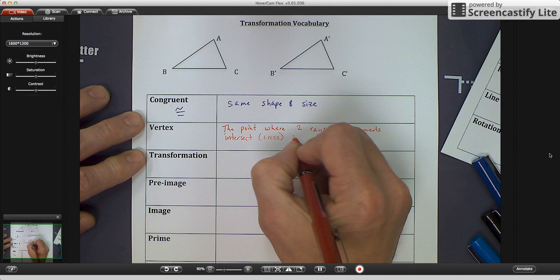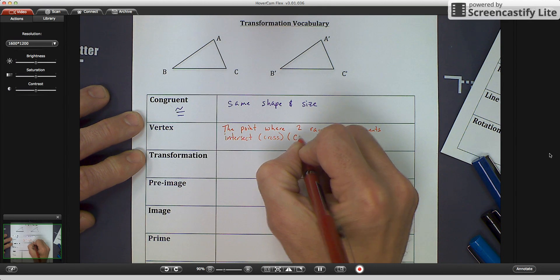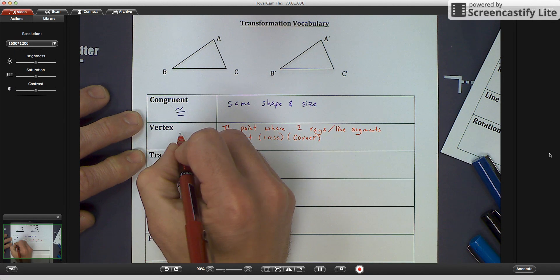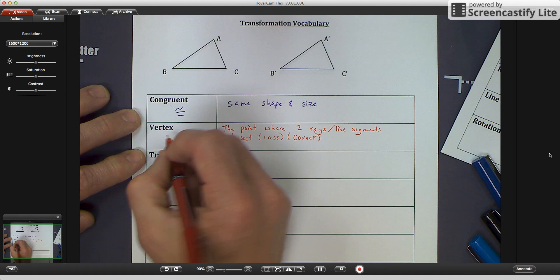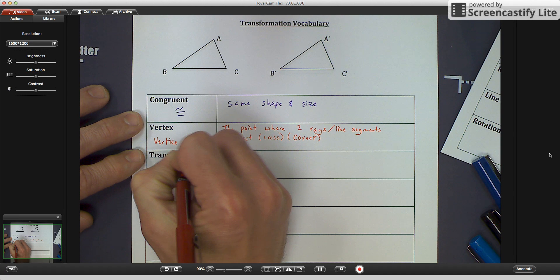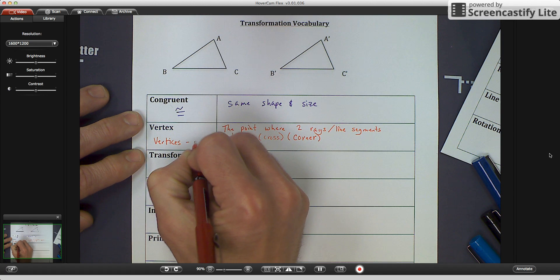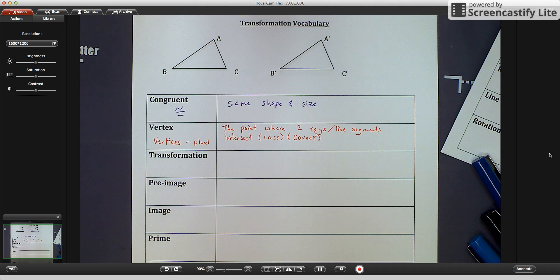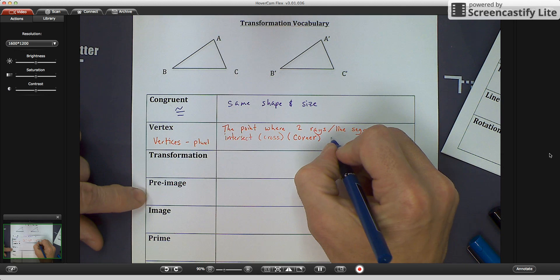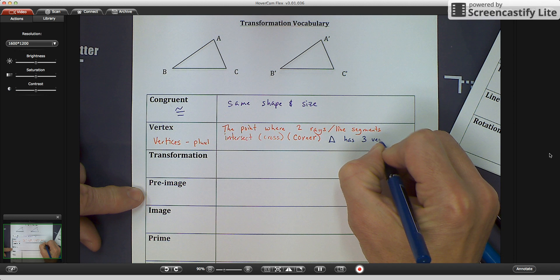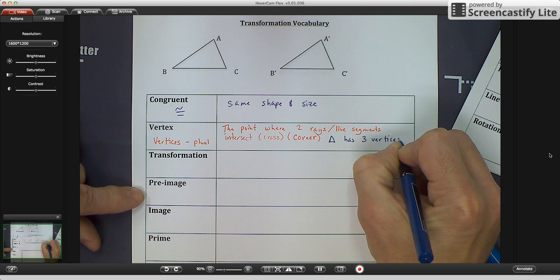Okay, a vertex is a corner on a shape. Vertex, so if we're looking at the triangle, we have three corners, so we have three vertices, and I'm going to put... Vertices is the plural when we're talking in that, okay? And give that a little example right there. I will say that a triangle has three vertices.